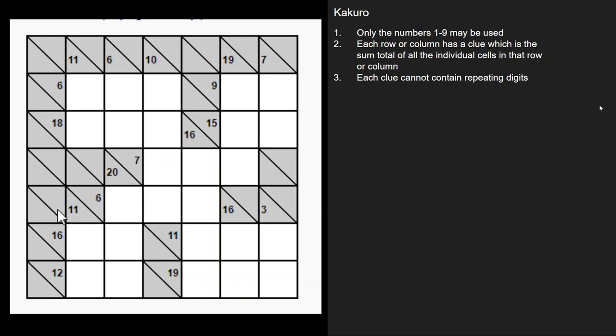There is just one other rule and that the sum totals may not include repeating digits. So this 16 for instance could not be an 8 and an 8. Even though 8 plus 8 equals 16, they're repeating. So that wouldn't work. The same thing with this 12. It couldn't be a 6 and a 6.